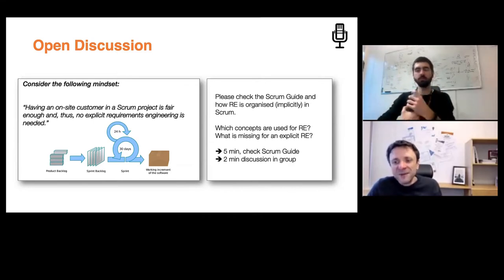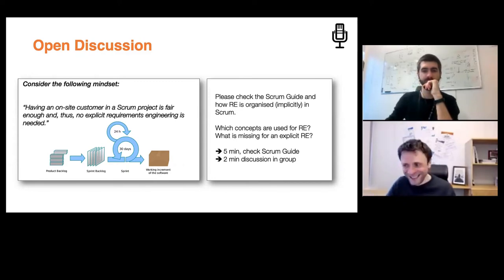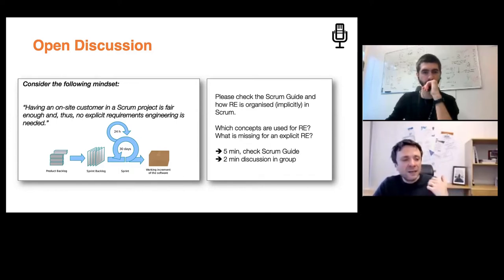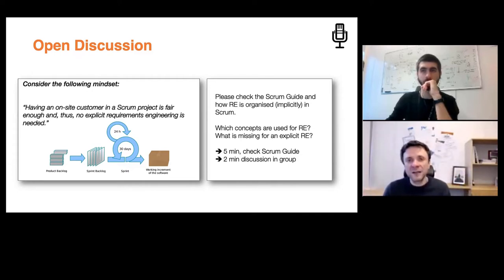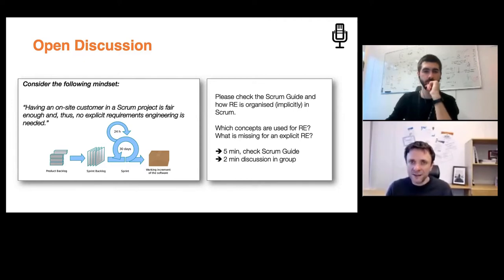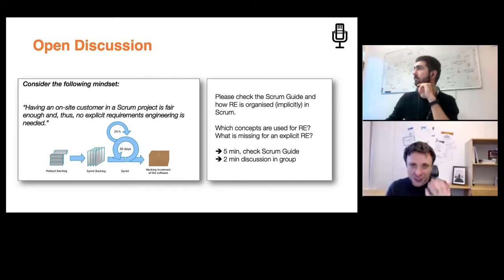Are requirements explicitly refined over different levels of abstraction? No. Requirements engineering is done, but implicitly: requirements are identified but typically we focus only on the most relevant ones. We do not really refine them; we leave refinement for the sprints and sprint reviews, where we discuss solutions rather than the problem. Requirements are typically not classified into functional and non-functional requirements.